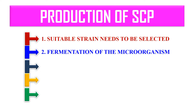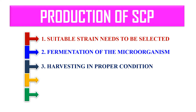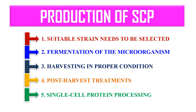We provide the microorganisms with media and maintain optimum pH and optimum temperature so that they grow very well. In the next step, harvesting is done under proper conditions — temperature, pH, other nutrients, and aeration should be properly maintained. Post-harvest treatments are also given, and finally the single cell protein biomass is processed to make it edible.